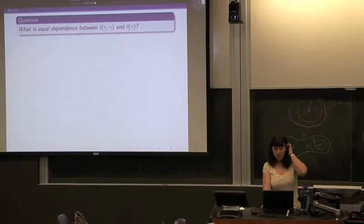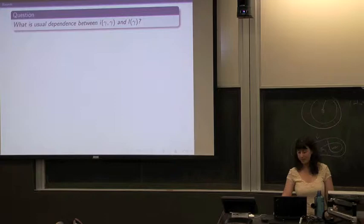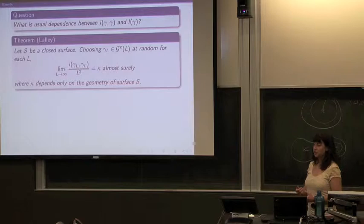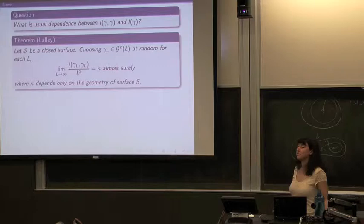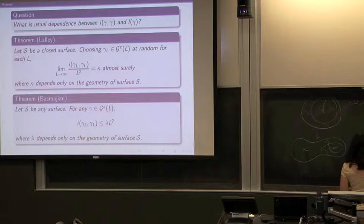Before we can do that, we have to talk about the natural dependence between length and intersection numbers. What should this dependence be? A theorem of Wiley says that if you choose a sequence of closed geodesics of length at most L at random, they'll grow asymptotically like κL², where the constant κ depends only on the geometry — only on the metric of your surface. And L² is basically the maximum number of self-intersections you can get.